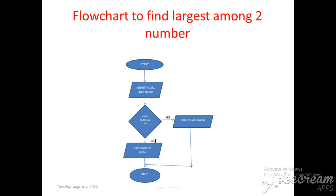The third step is to check whether num1 or num2 is larger using a decision diamond: 'Is num1 > num2?' It contains two options — yes and no. If num1 is greater than num2, on the yes branch we print 'num1 is larger' using a parallelogram, then move to stop. If num1 is not greater than num2, on the no branch we print 'num2 is largest', then also move to stop. The decision box always contains two parts: yes or no.